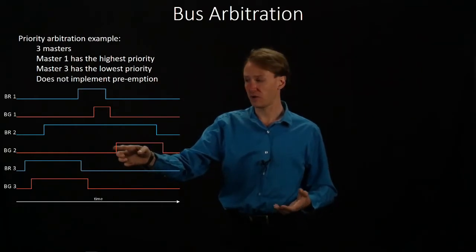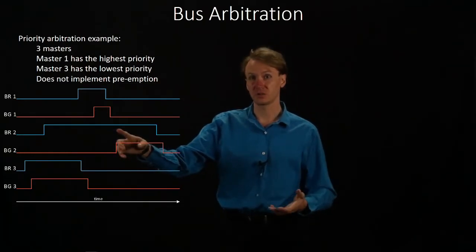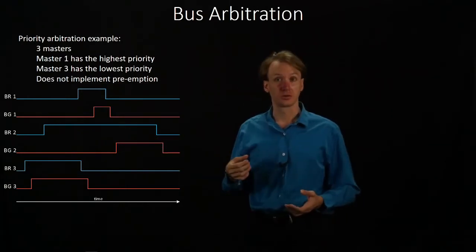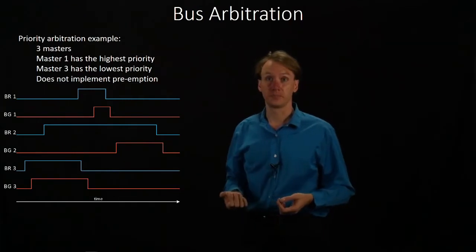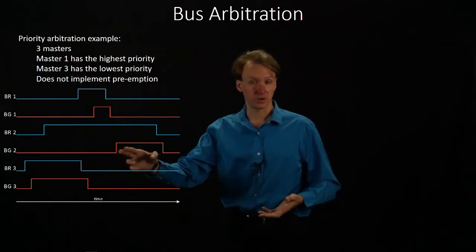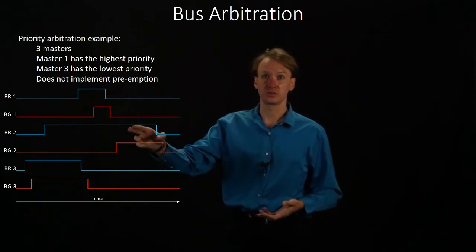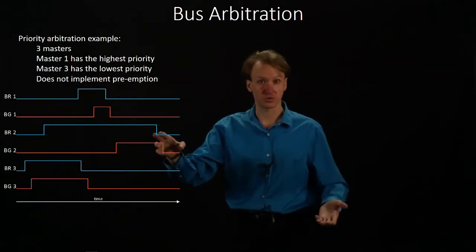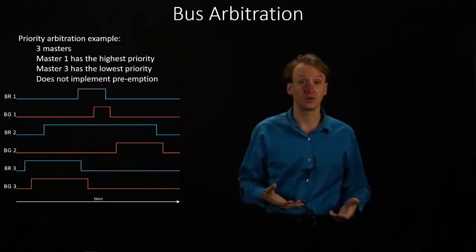Then the arbiter can finally grant access to Master 2. Master 2 has been sitting around waiting for the bus for quite a while, but the bus was either in use or somebody else had priority. So the arbiter finally grants access to Master 2. Master 2 uses the bus for a while, and once it's done, it deasserts its bus request signal and the arbiter again deasserts the bus grant signal.